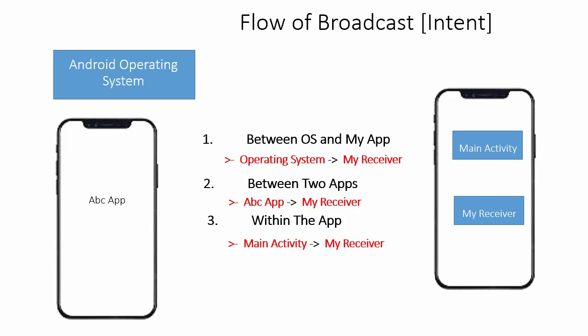We can also use broadcast receivers between two apps — your app sends a message and when it reaches my app, it is received by the broadcast receiver. For example, in a media player, when you use a notification to pause or play audio or video, it sends a message to the app. That is an example of a broadcast within the same app.